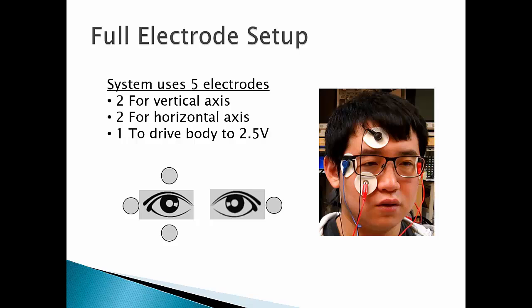This is the full electrode setup for our system. Our system uses five electrodes, two for the vertical axis, you have an electrode that goes above one of the eyes and below one of the eyes, there's two for the horizontal axis which sit on either side of the face, and there's one electrode that drives the body to 2.5 volts. The reason for this is that the Arduino microcontroller can only read in analog values from 0 to 5 volts. So by establishing a baseline of 2.5 volts, this gives us a 2.5 volt range on both sides of this baseline that our signal can exist by. On the bottom of the screen you see a diagram of the electrode placement, and on the right you see the electrodes actually in action.